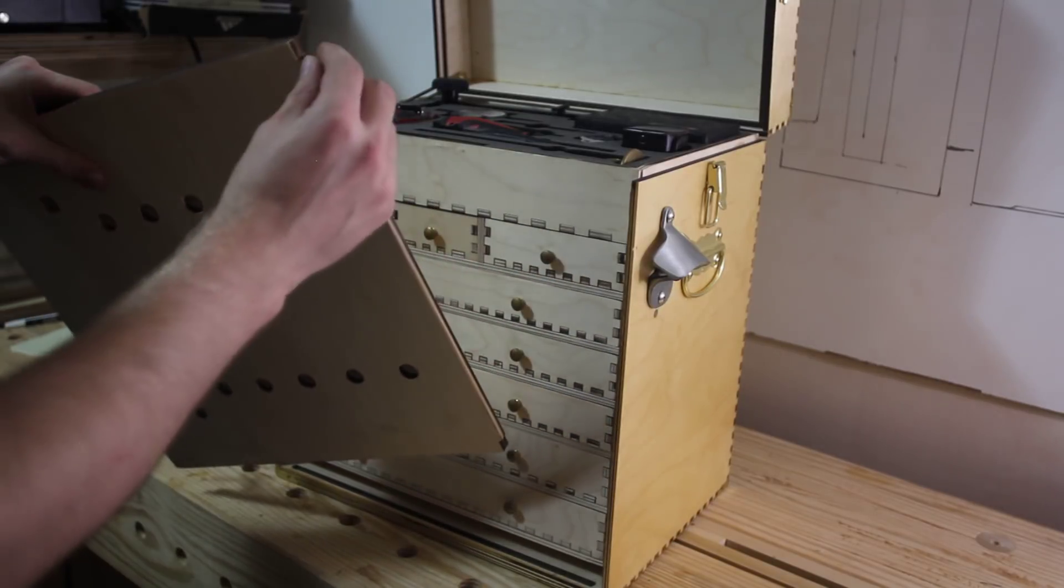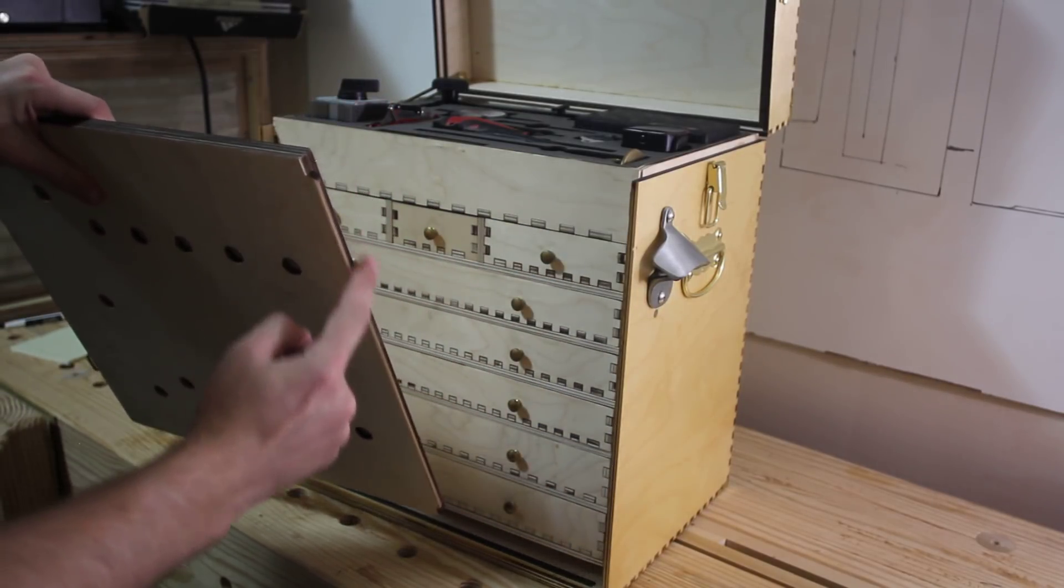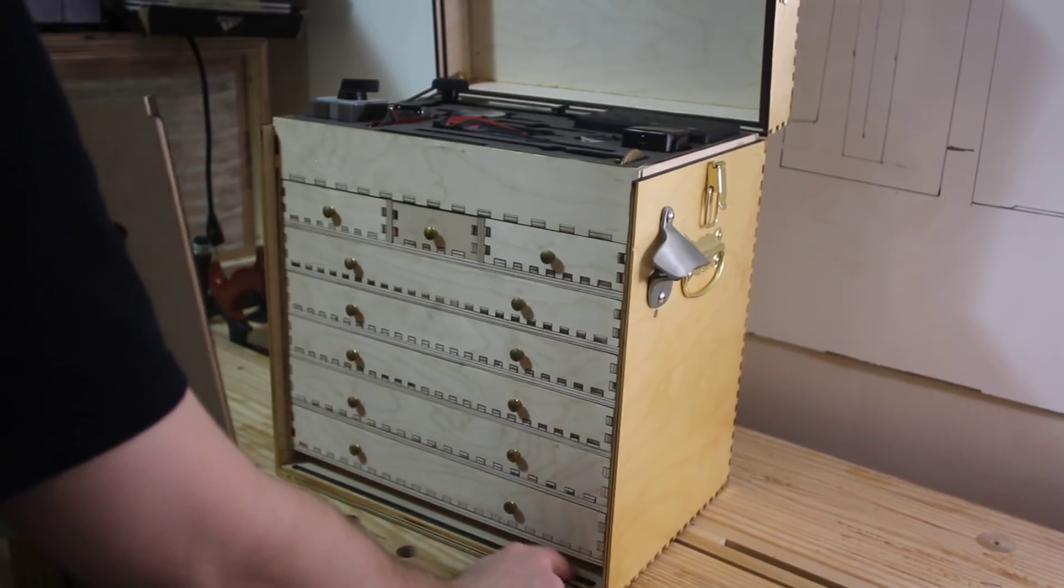Now, one thing to note about the lid, or sorry, the front panel, is that there's also a lip across the bottom of the panel. This fits into a groove in the bottom of the toolbox, which locks the front panel from the very bottom.